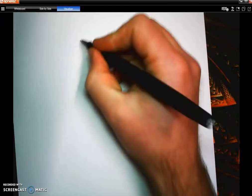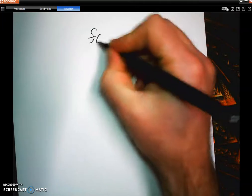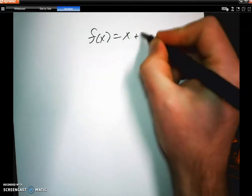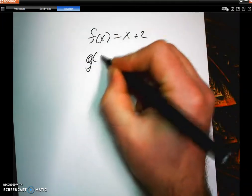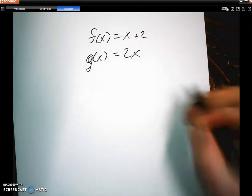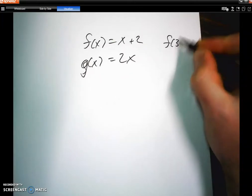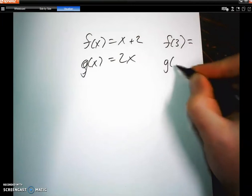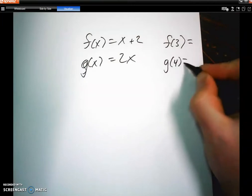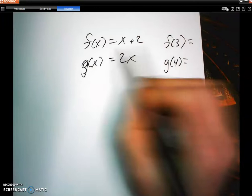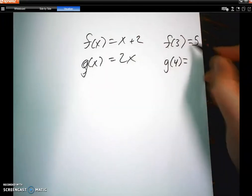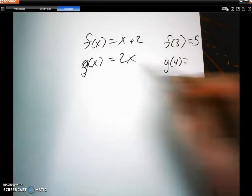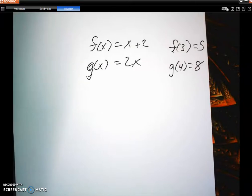Do you remember function notation, where you have like f of x equals x plus two and g of x equals two x. So what does f of three equal? And what does g of four equal? So you go to the f function, you plug in a three, three plus two is five. Go to g, plug in a four, four times two is eight. Function notation.